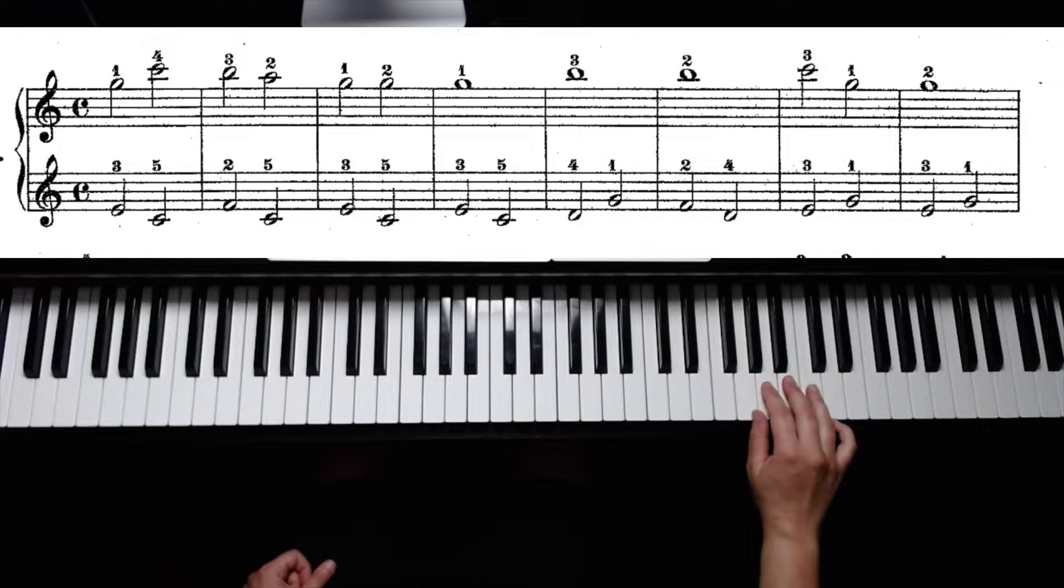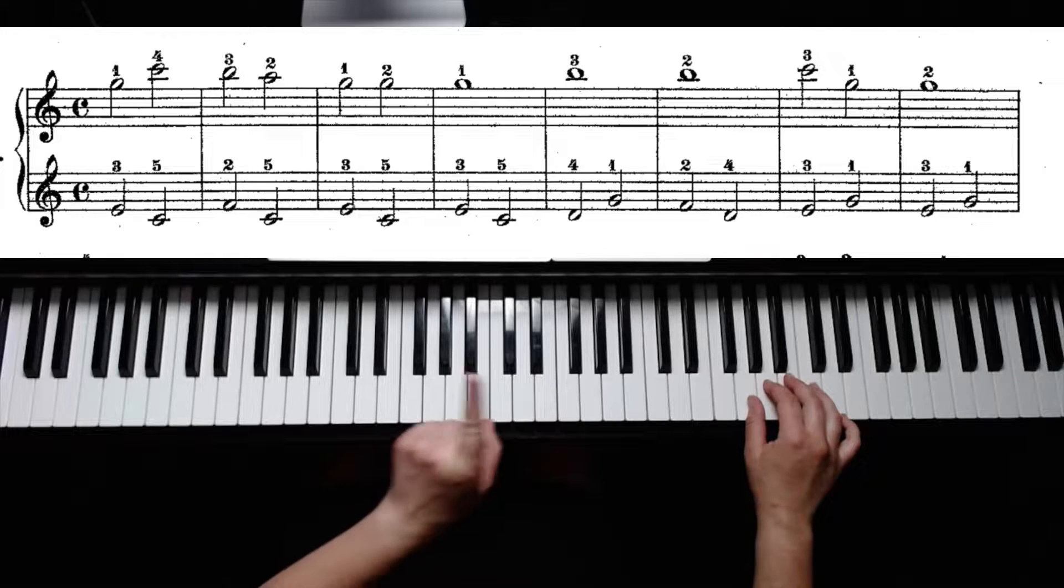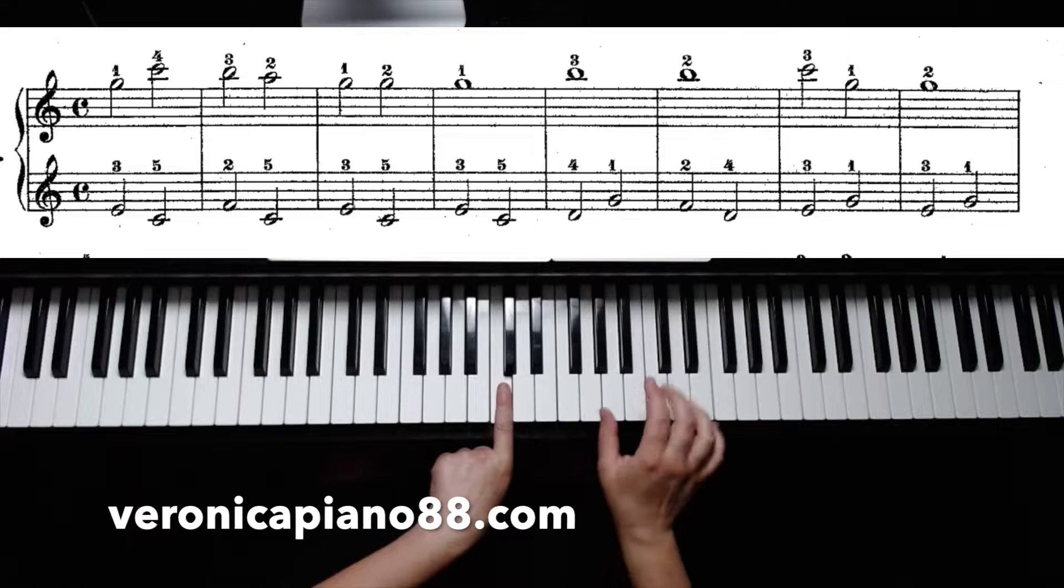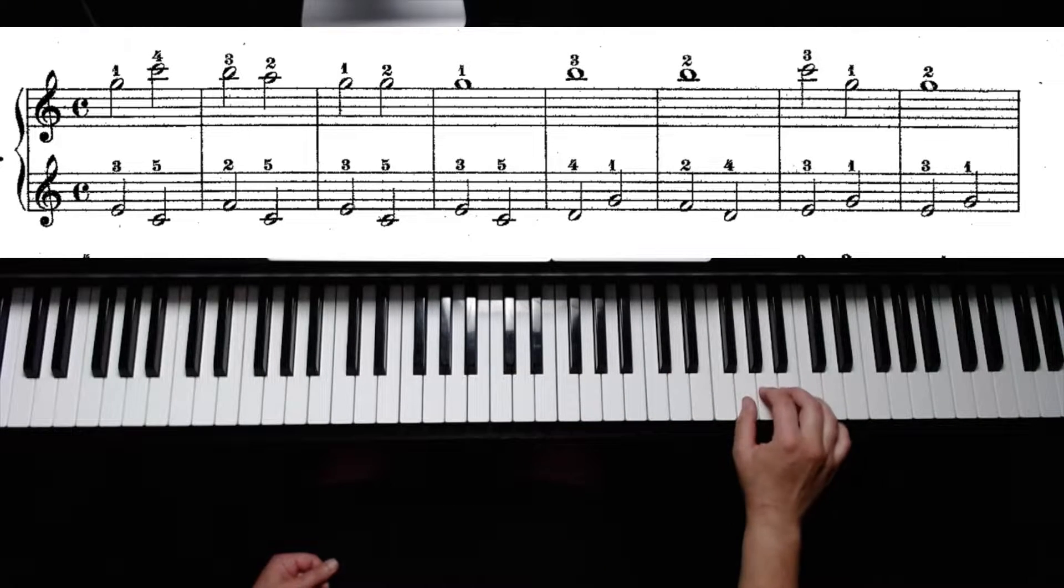In this exercise, we will start with our right hand on this upper G. So in relation to middle C, middle C is here, and there is a G after it. Middle C, G, G one octave higher. That's where your thumb is going to go.